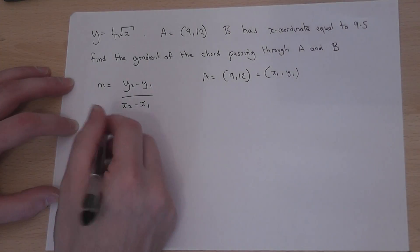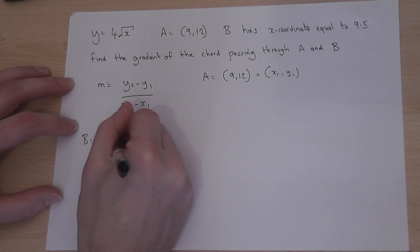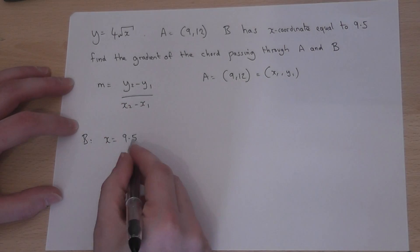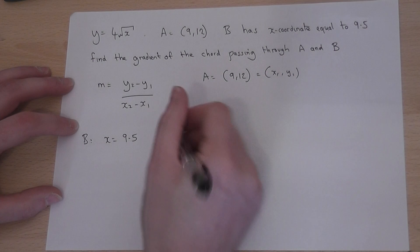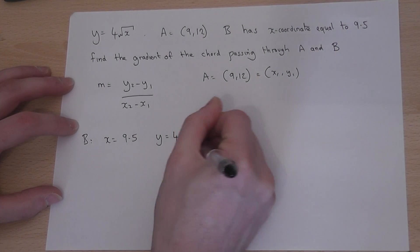We know that for coordinate B, x-coordinate is 9.5, so I can find its y-coordinate by using the formula given. y will equal 4 lots of root of 9.5.